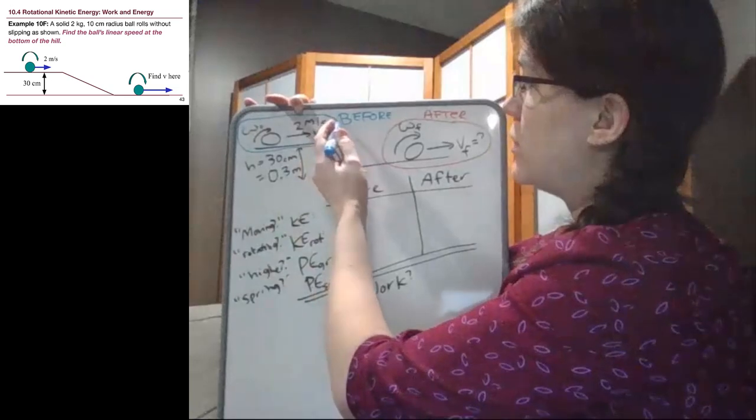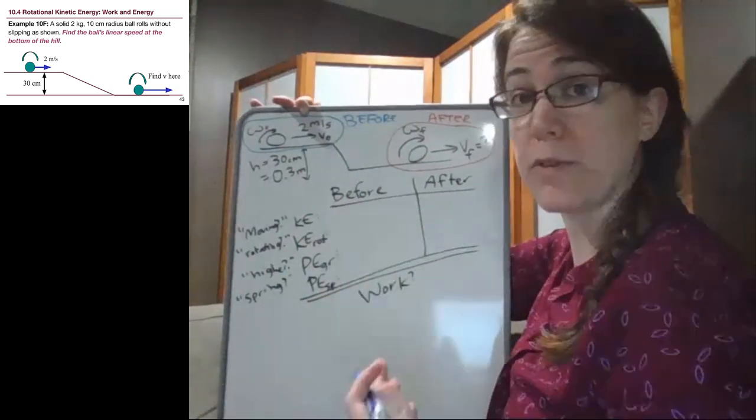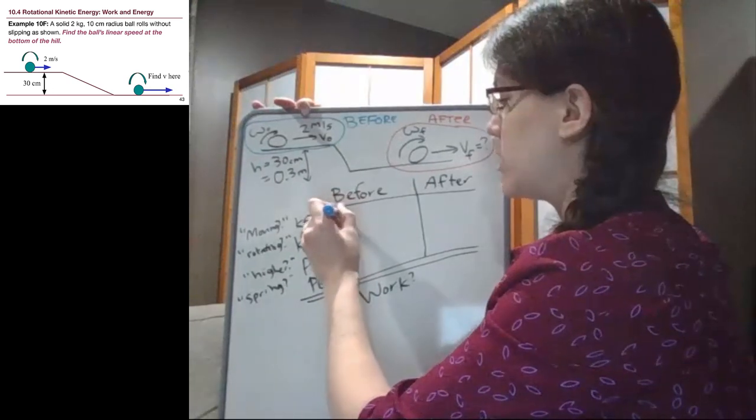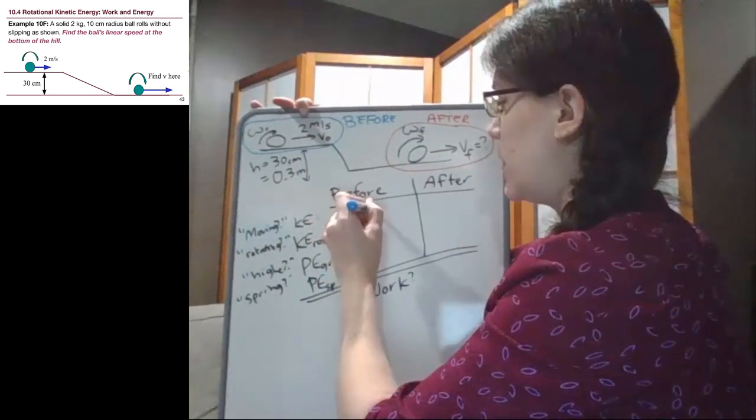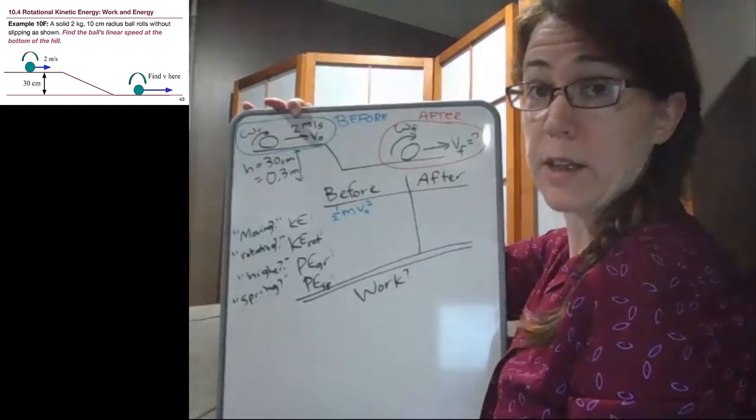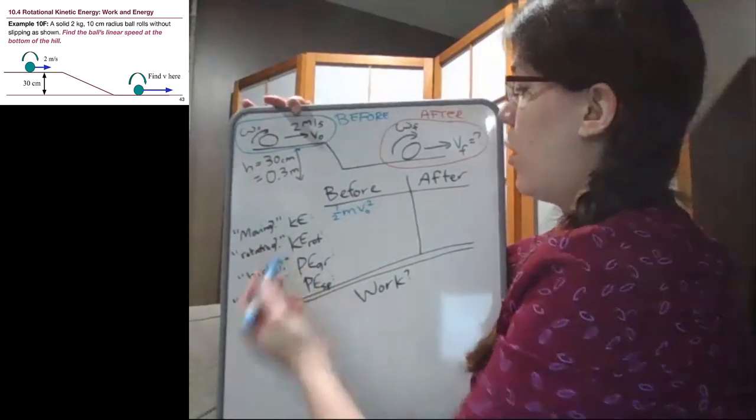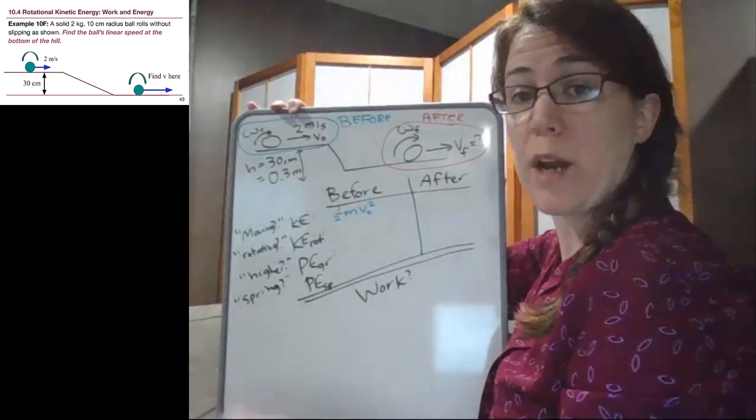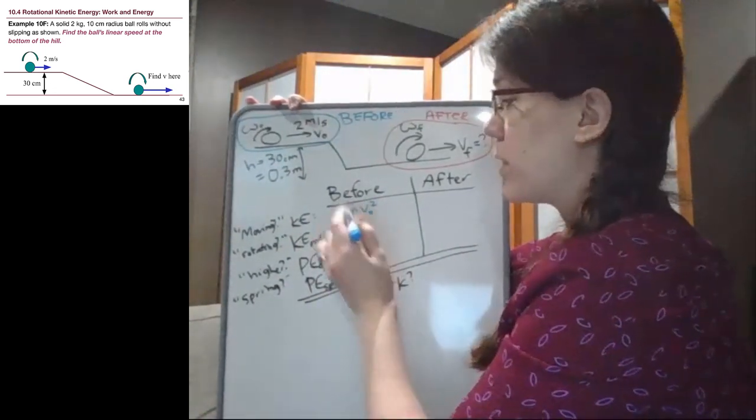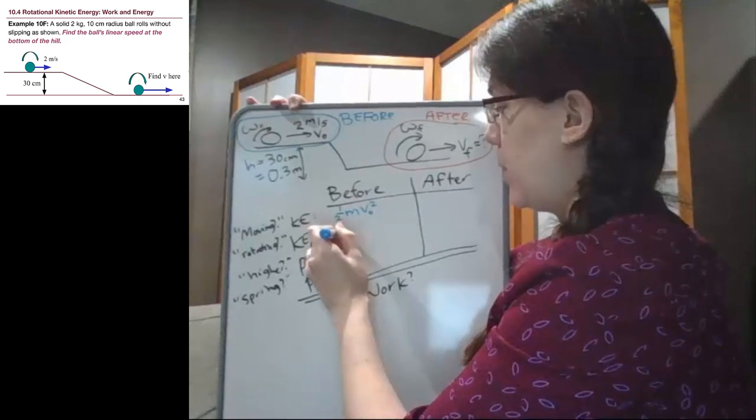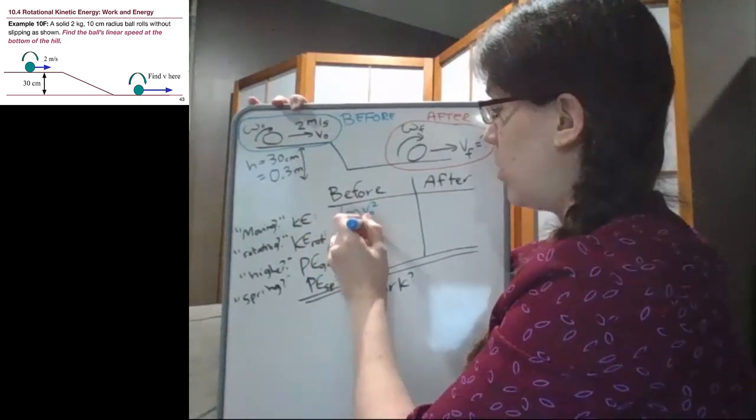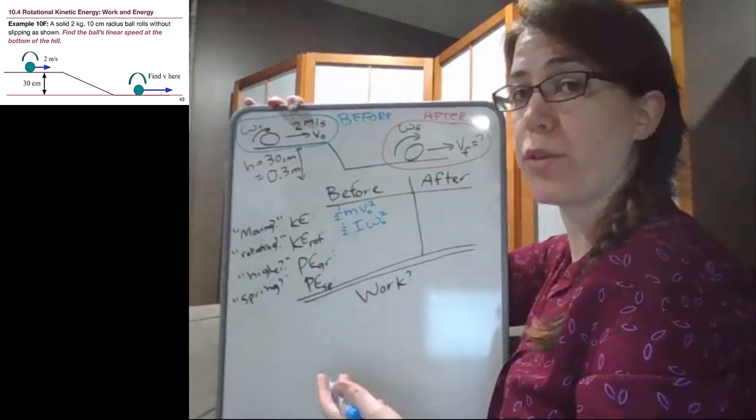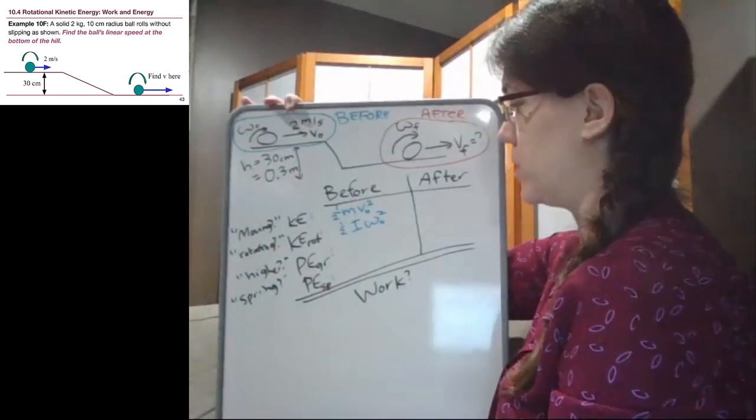Are we moving at the start of the problem? We are definitely moving because we're given that initial speed. Are we rotating? We are rolling without slipping the entire time, so if we are moving, then we are also rotating. By having us roll, those two terms have to be together in the problem.